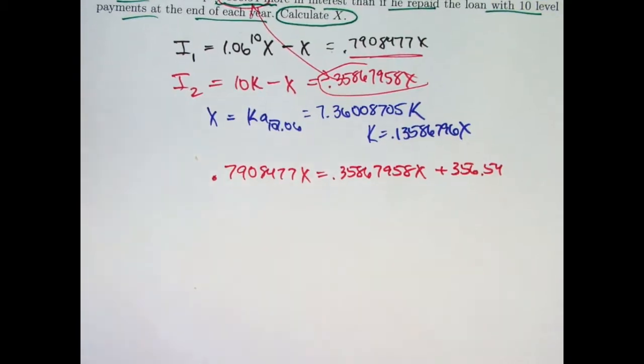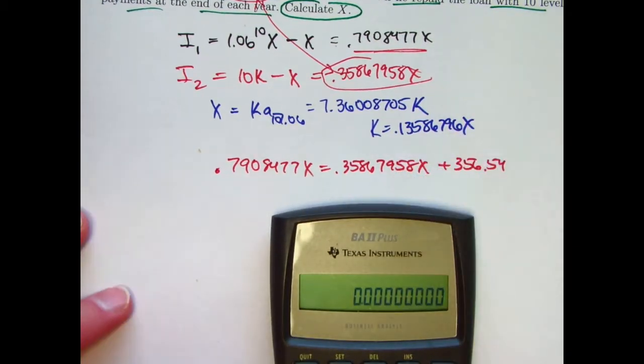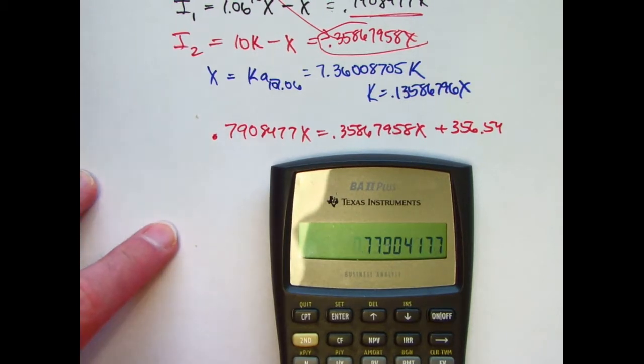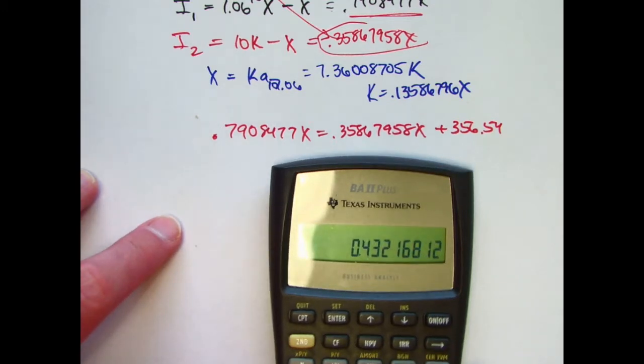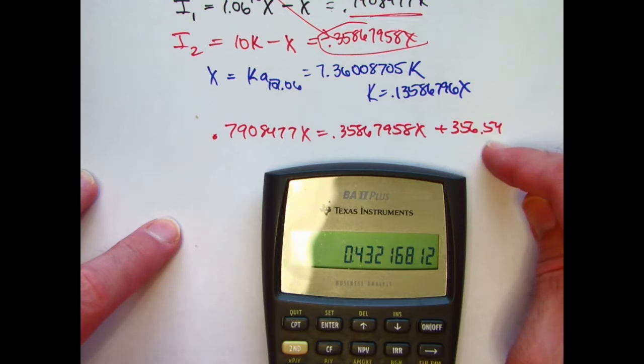Let me just do this with my calculator. A nice simple linear equation. I will subtract 0.35867958X from both sides. Maybe should have saved some things in my register here, but oh well. Take 0.79 minus 0.35867958. So, 0.432 times X will equal 356.54.